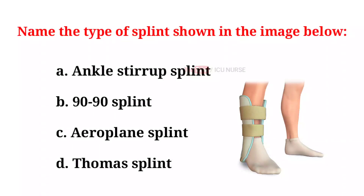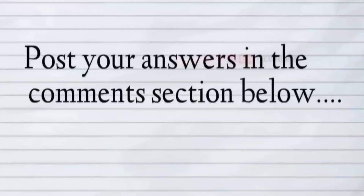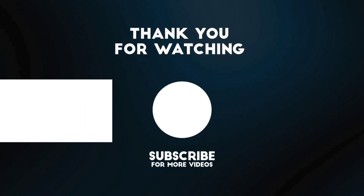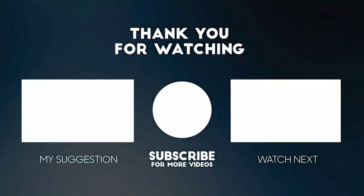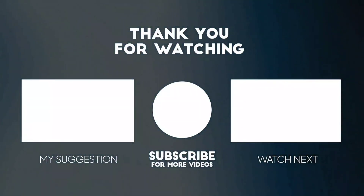Name the type of splint shown in the image below. A. Ankle stirrup splint. B. 90-90 splint. C. Aeroplane splint. D. Thomas splint.